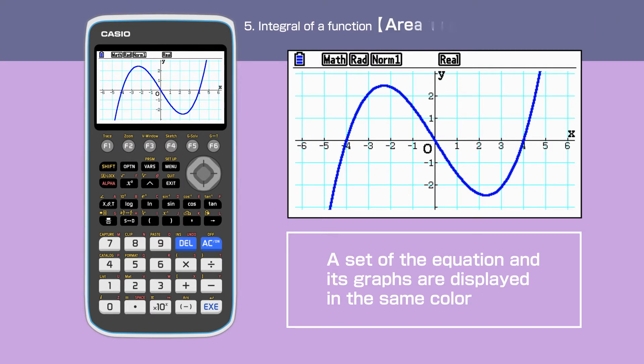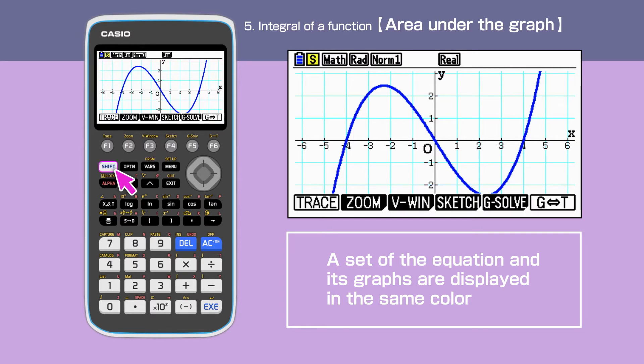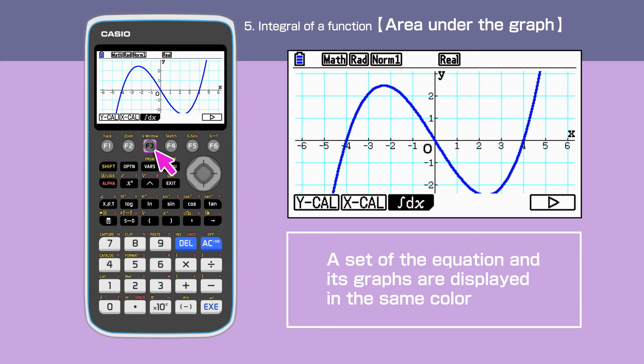We can find the area under the graph by pressing Shift F5 to open the G-Solve command. Press F6 to go to the next set of command page and select the integration command by pressing F3.